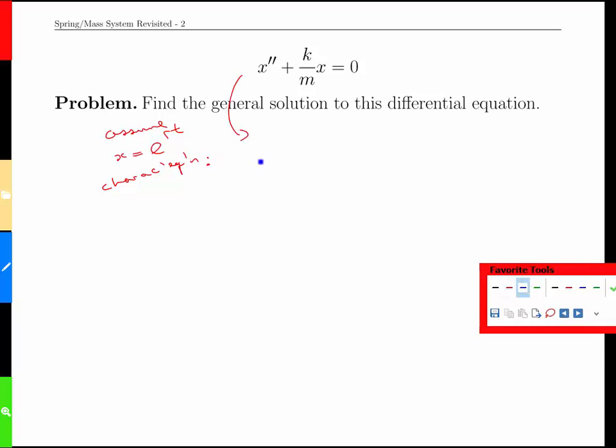And that's going to give us the characteristic equation, which in this case here is simply r squared, there's no x prime so there's no r, but we do have a k over m with no derivative and zero on the right hand side.